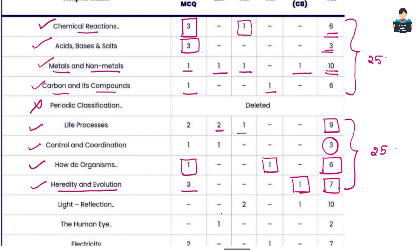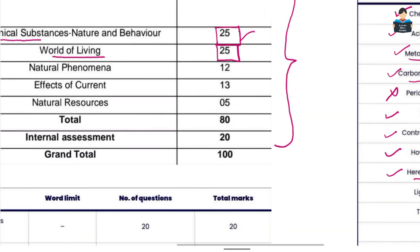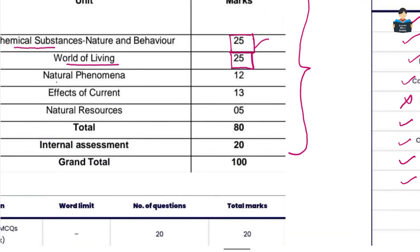In the heredity chapter, there are 3 mark questions and case-based questions including dihybrid cross. In how organisms reproduce, you will see a 5 mark question and a 1 mark question. Male and female reproductive organs are important topics. Next is natural phenomena — in this unit, we have 12 marks.